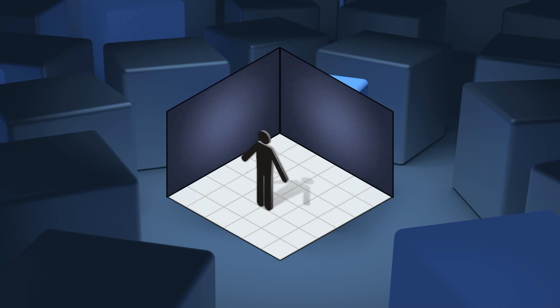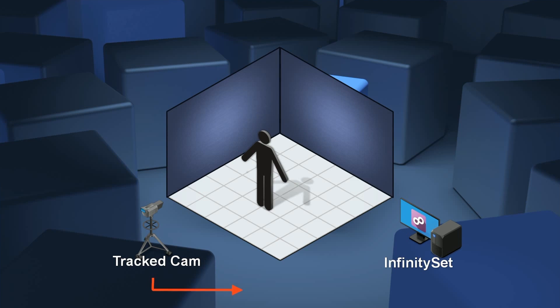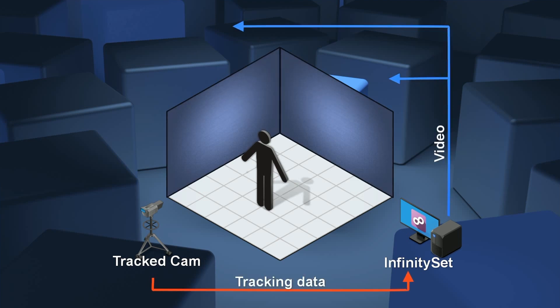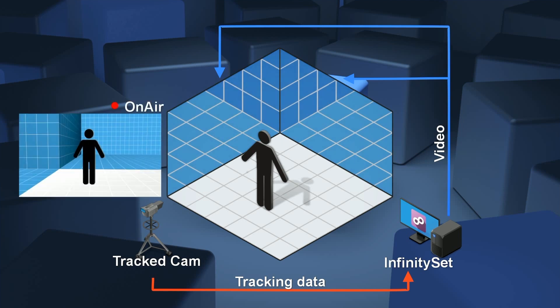Let's start by explaining how XR works. First we need a tracked camera, which gives the position of the camera to Infinity Set. Infinity Set then renders the scene for the LED wall. Then the camera captures the rendered scene and the talent, giving us a final image composite. Then as the camera moves, the rendered image changes to match the camera's movement.